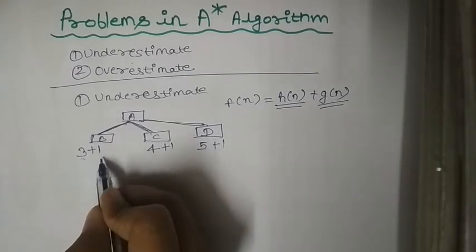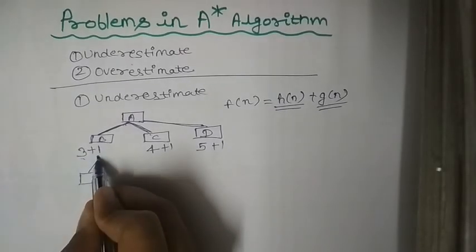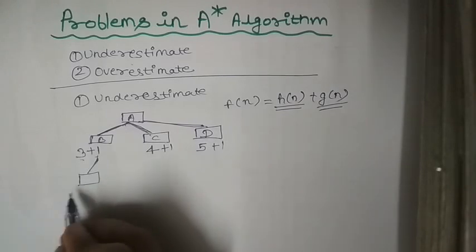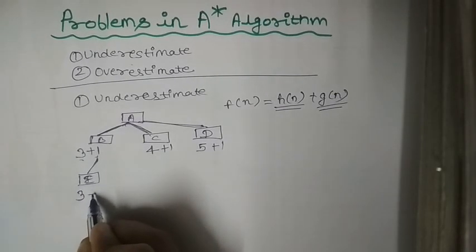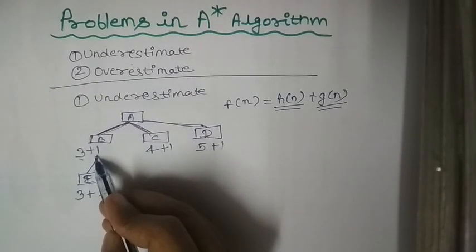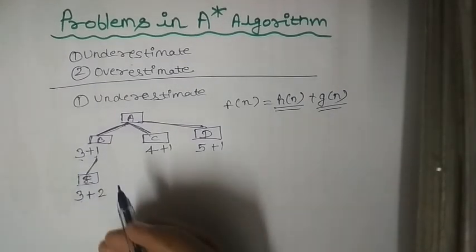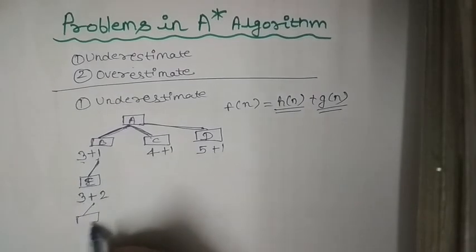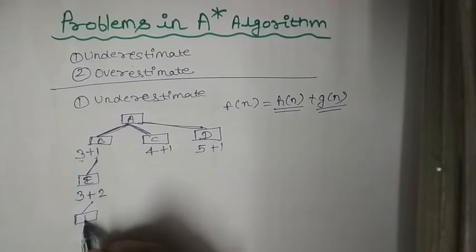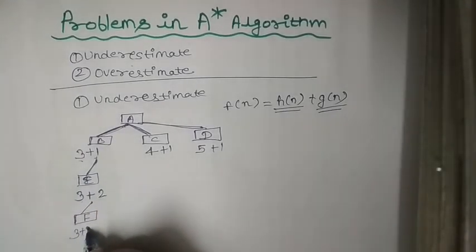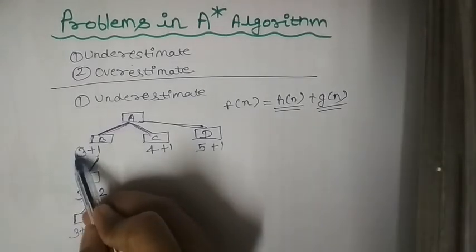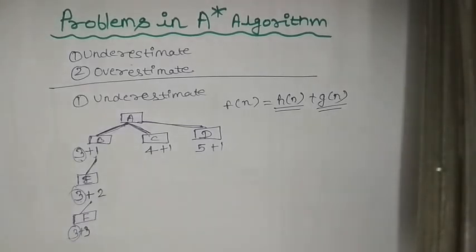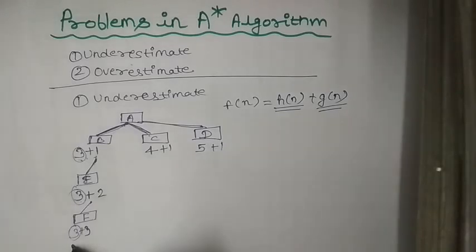I am calculating F(n) values and suppose you will explore this one again, as its value is smaller than all others and you are getting this node — suppose E node. E node has a heuristic value of 3 and the edge values are 1 and 2, so it becomes 2. Suppose you are getting heuristic value 3 again, and if you explore further with 3 edges, the heuristic value stays the same: 3, 3, and 3. Suppose the heuristic value always remains the same.